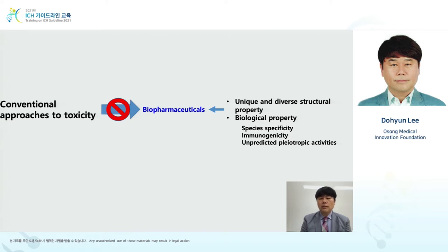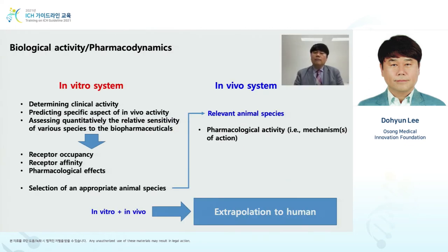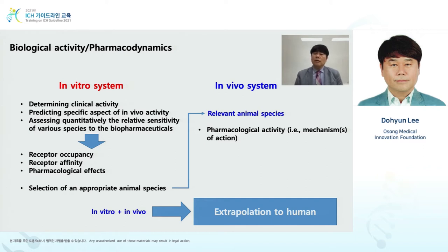For biopharmaceuticals, conventional toxicity tests cannot be applied due to structural properties and biological activities. Biological activity and pharmacodynamics of biopharmaceuticals are assessed using an in vitro system, which enables clinical activity determination, prediction of specific aspects of in vivo activity, and quantitative relative sensitivity assessment. This also helps in selecting the relevant animal species.